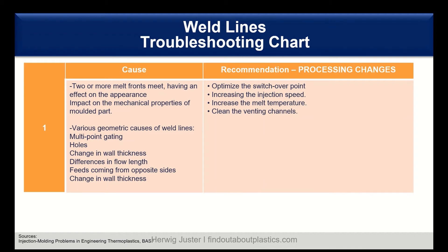Starting with processing changes, we can optimize the switchover point to holding pressure. Switch over at approximately 98% of the filling level, just before volumetric filling is reached. This can already improve the surface appearance. We can also increase the injection speed; however, if you have venting problems in the weld line area, the injection speed should be reduced rather than increased.